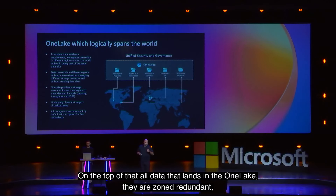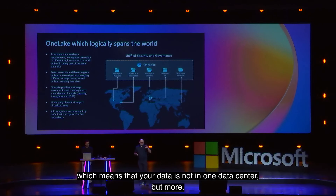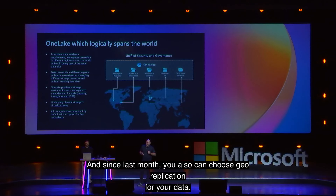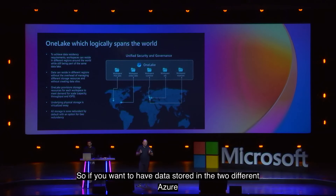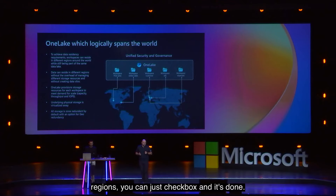All data that lands in OneLake is zone redundant, meaning your data is not in just one data center but more. And since last month, you can also choose geo-replication for your data. If you want data stored in two different Azure regions, you just check a box and it's done.